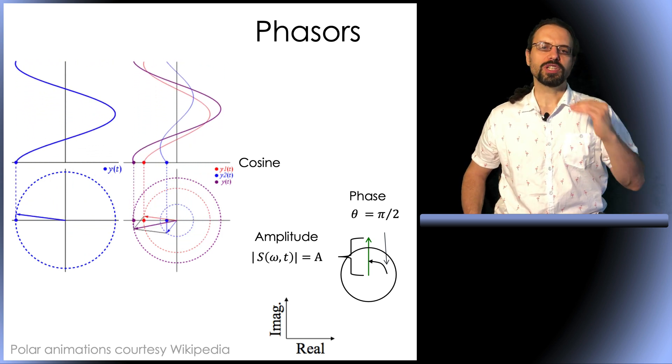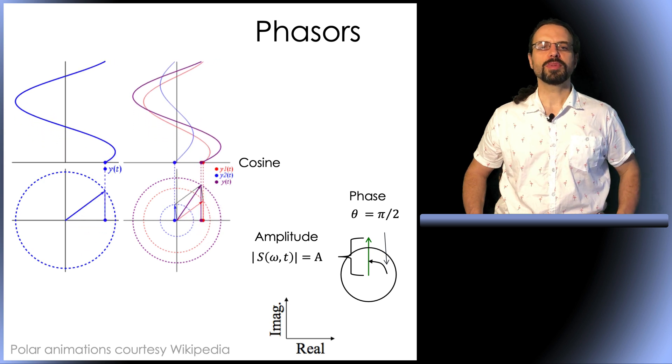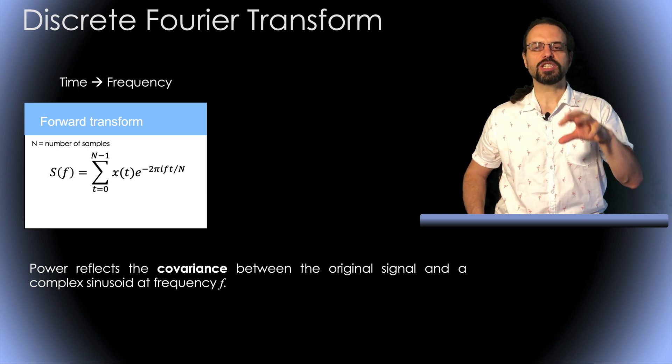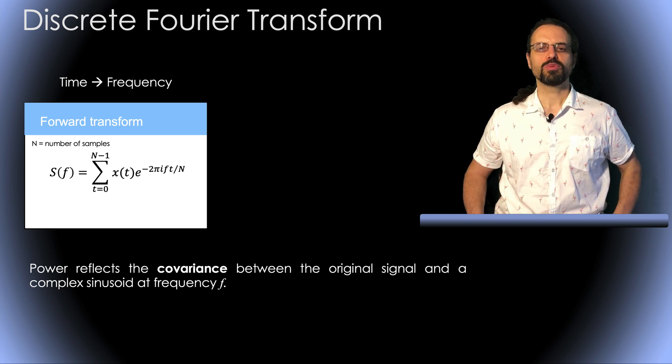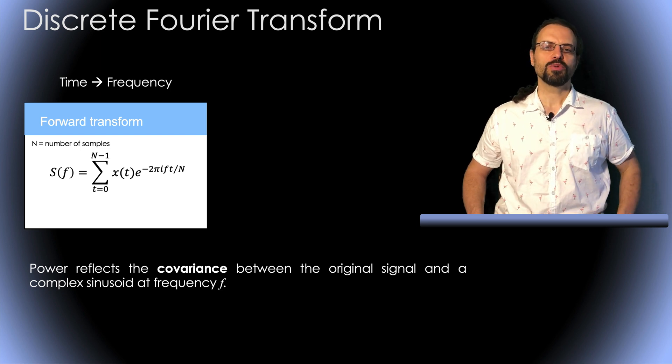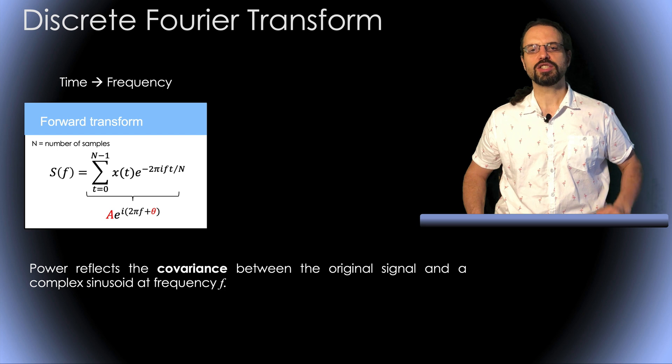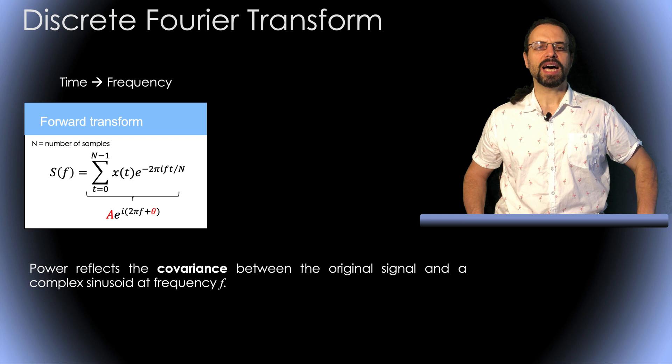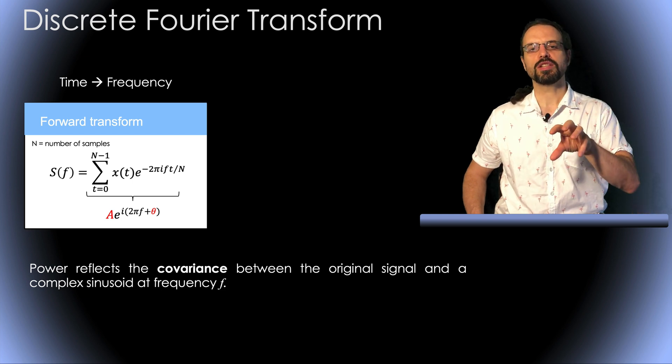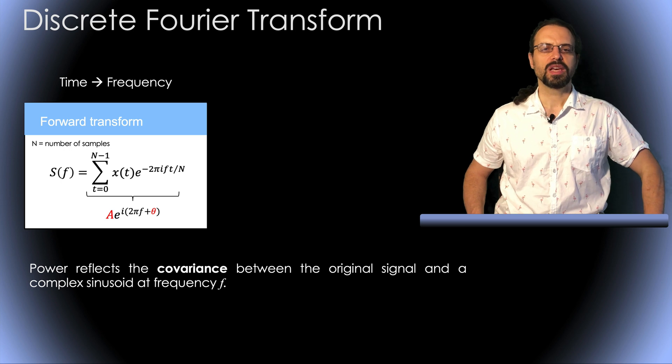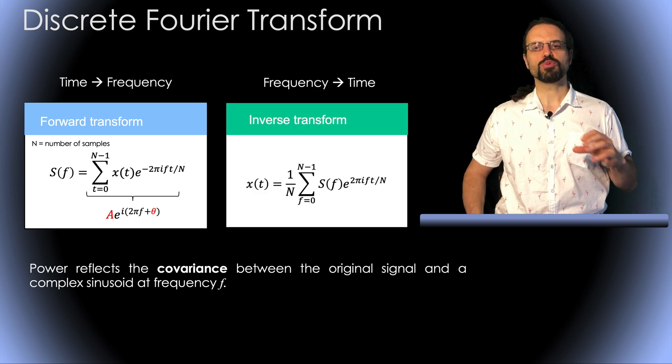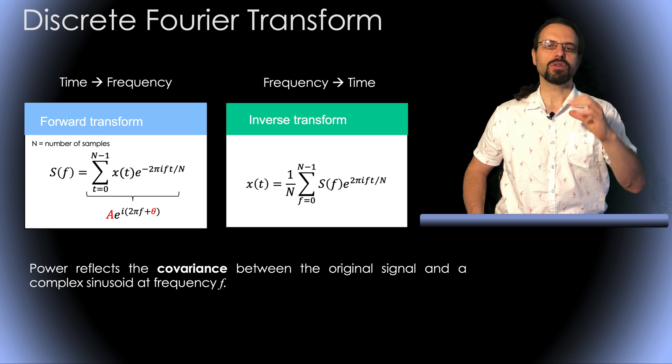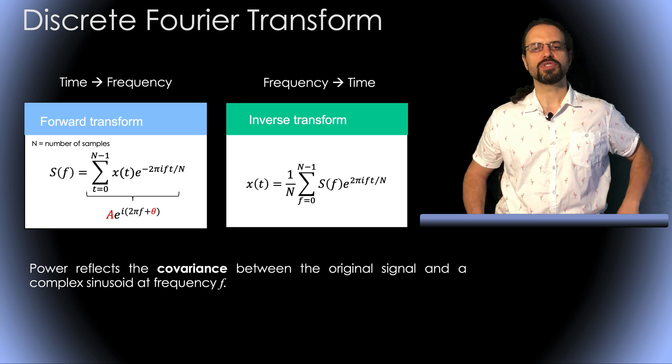So let's go back to Fourier definition, which states that a signal in the time domain can be described by a sum of sinusoid with different amplitudes and phases. So this is what this equation represents here for a single frequency. When we apply this formula for a given frequency, we obtain a phasor at that frequency, which has a specific amplitude and phase, here in red. And the power reflects the covariance between the original signal and a complex sinusoid at that frequency. And of course, we also have the inverse Fourier transform, in which we can take and combine these phasors across frequencies and get back the original time domain signal, as I showed you in one of the first slides.